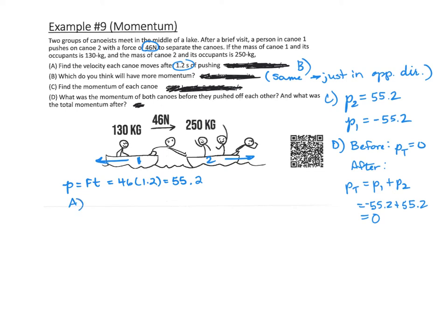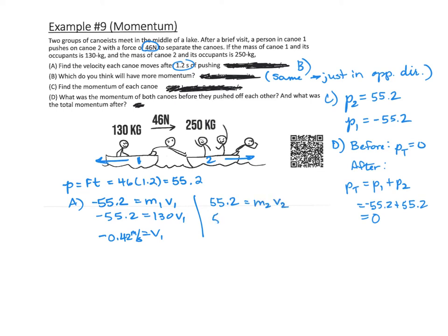Let's go to part A. We want to find the velocity of each canoe after 1.2 seconds. Canoe 1 has a momentum of negative 55.2, equal to the mass of canoe 1 times the velocity of canoe 1. Canoe 1's mass is 130, so dividing both sides gives a velocity of negative 0.42 meters per second. Canoe 2 has positive momentum 55.2 equals 250 times the velocity of canoe 2. Dividing both sides by 250, the velocity of canoe 2 is 0.22 meters per second.